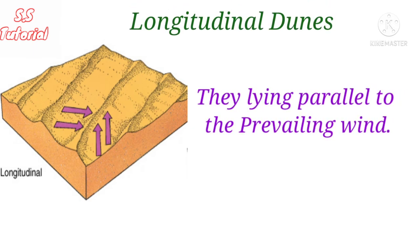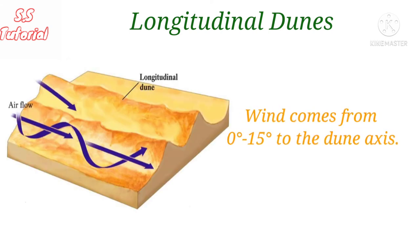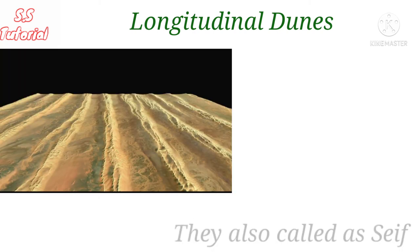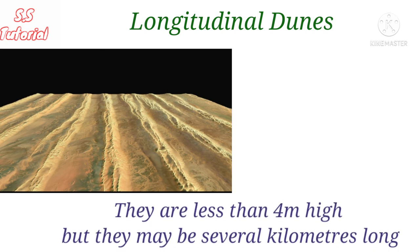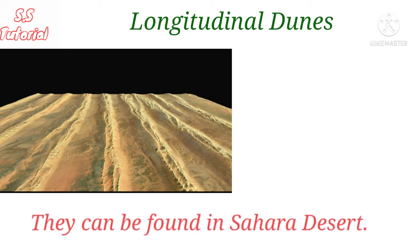Longitudinal dunes are large, elongated dunes lying parallel to the prevailing wind direction. They have a generally symmetrical cross-section and are formed by wind coming from two slightly different directions, usually 0 to 15 degrees to the dune axis. They form in areas located behind an obstacle where sand is abundant and the wind is constant and strong. Longitudinal dunes are also called seif dunes — an Arabic word meaning sword. They are usually less than 4 meters high but may be several kilometers long, and are found in the Sahara desert.